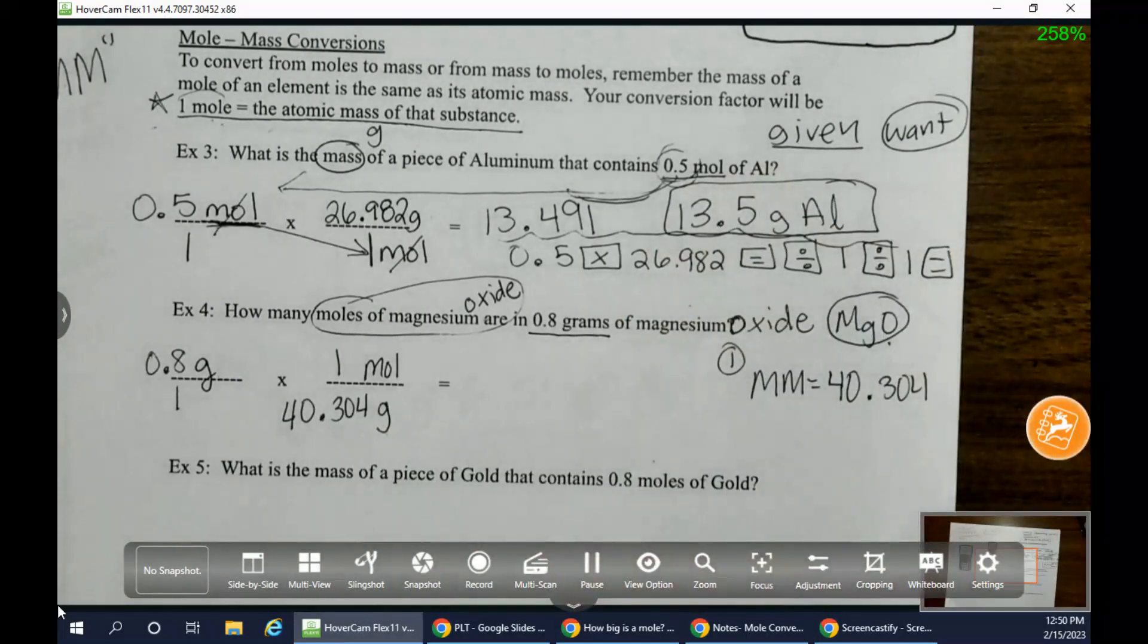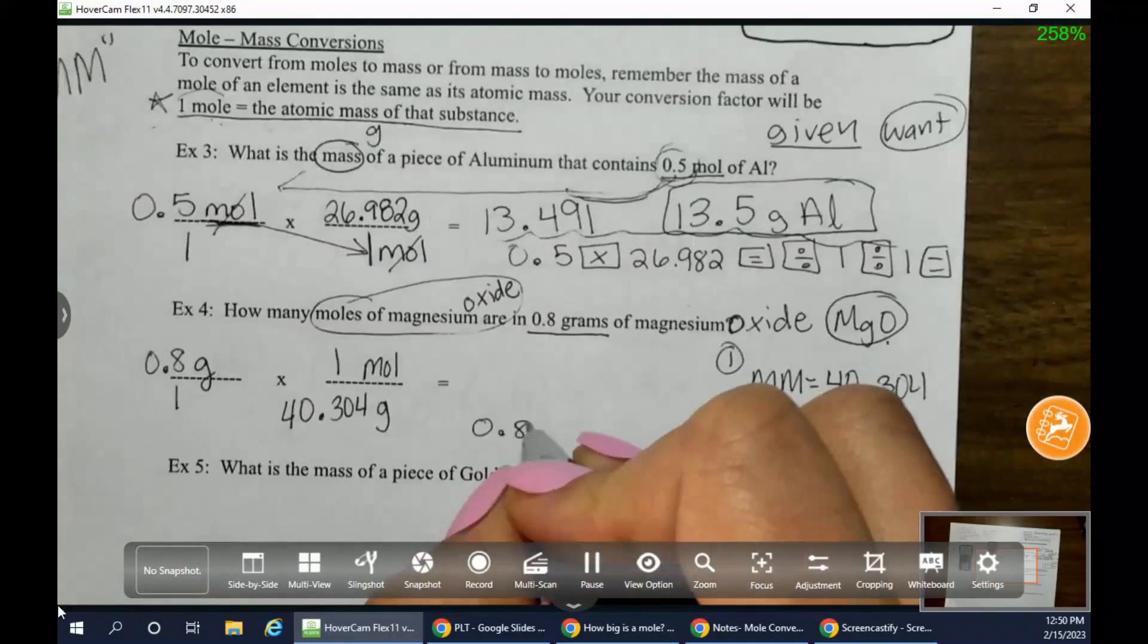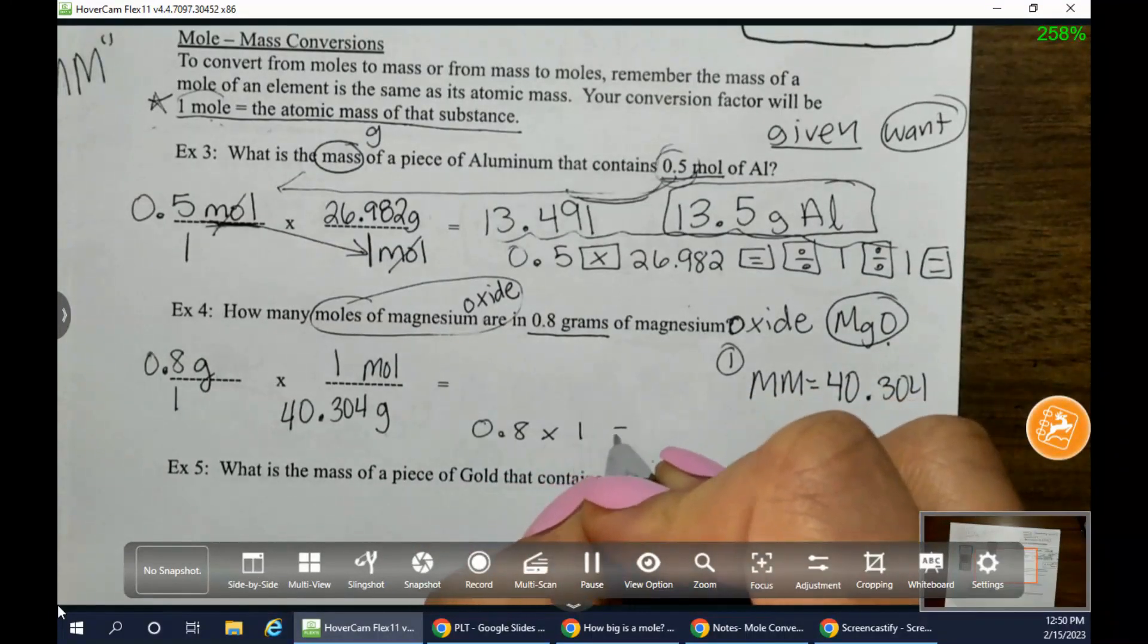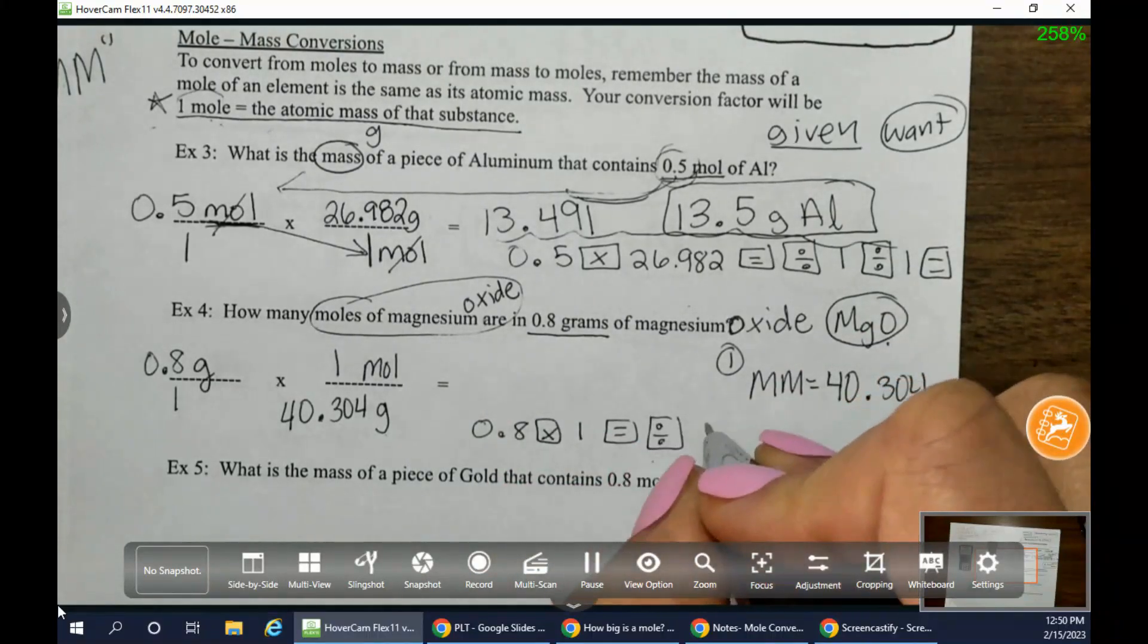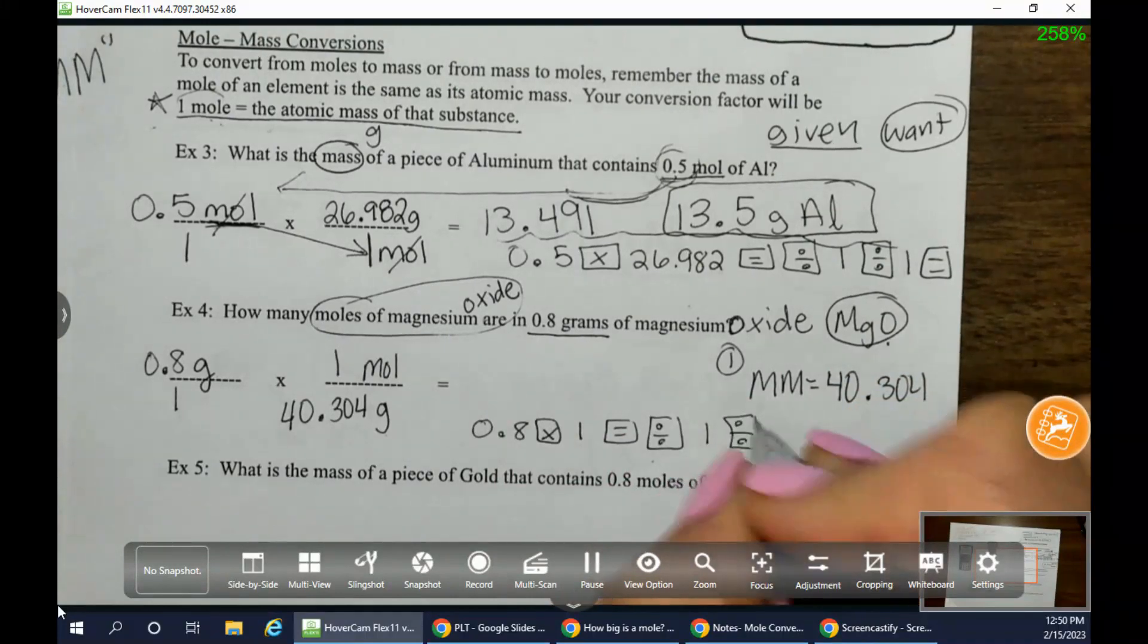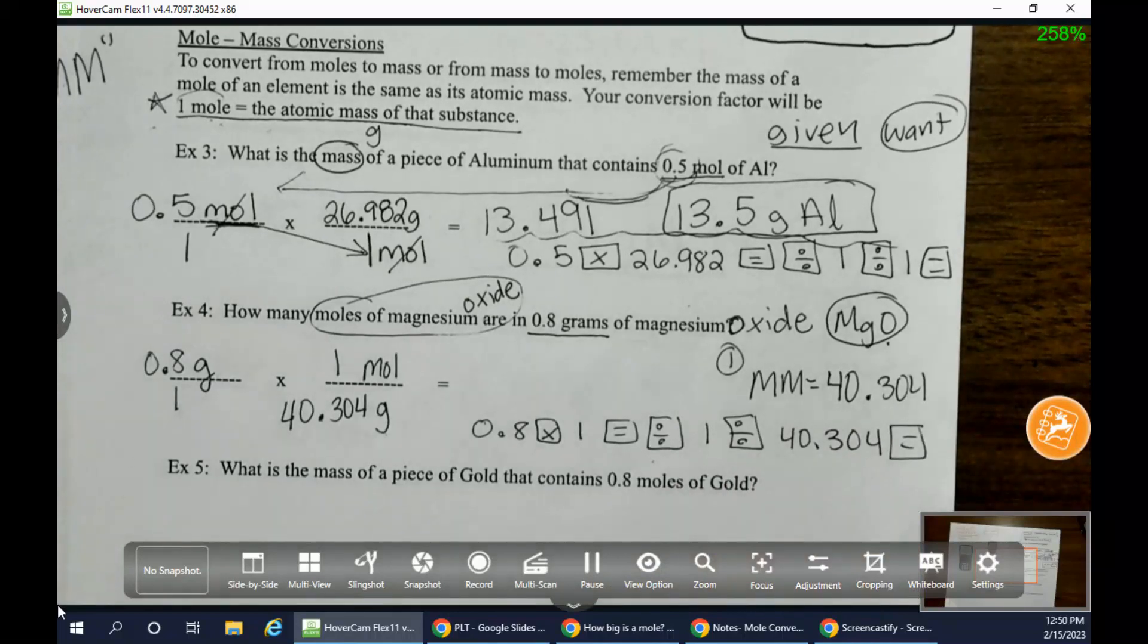So now I have this. So when I personally am going to type this into my calculator, I'm going to go 0.8 times one. I'm going to push equals. And I'm going to immediately push the divide. 1 divide 40.304. Push equals and you will get your answer. Use your notes time to really establish how you are going to be typing into your calculator. Again, don't let that be the thing that messes you up.